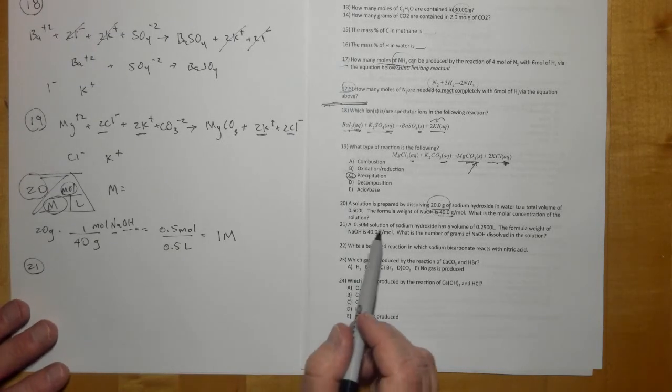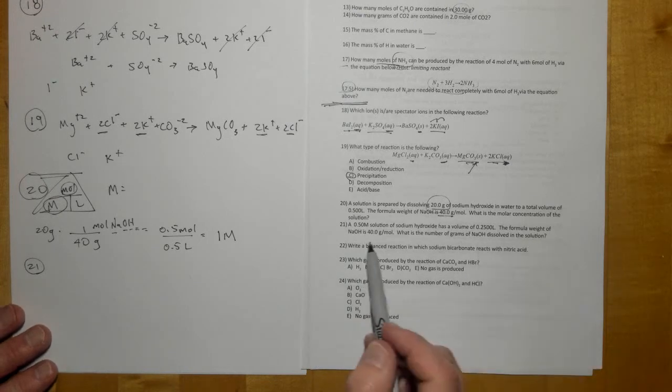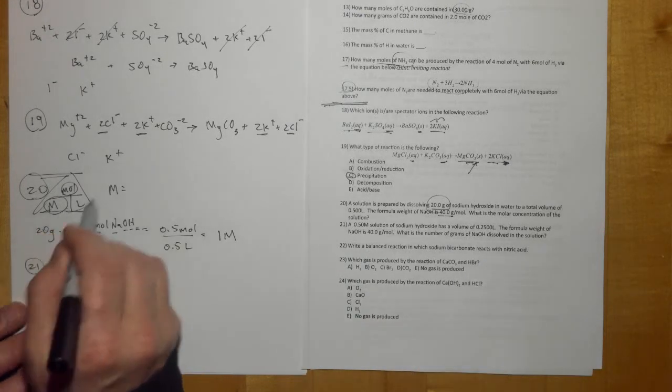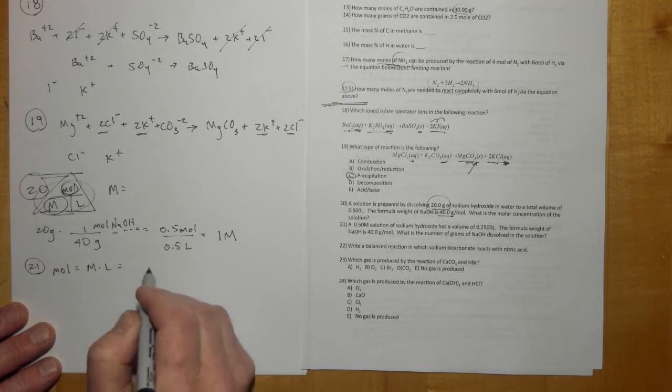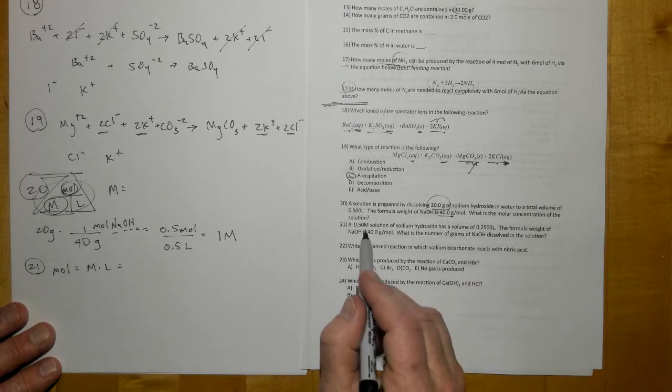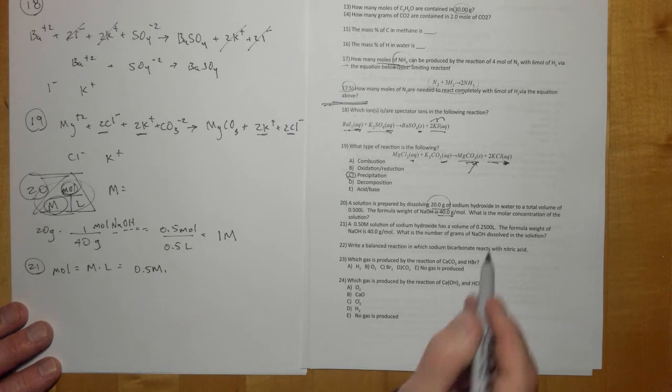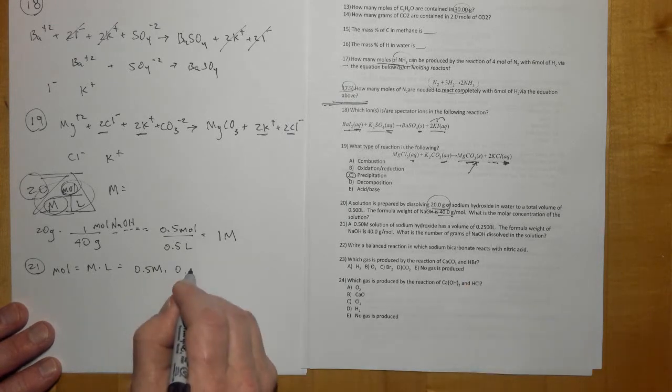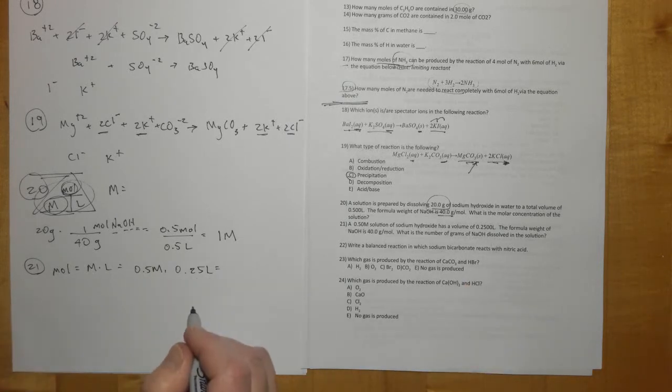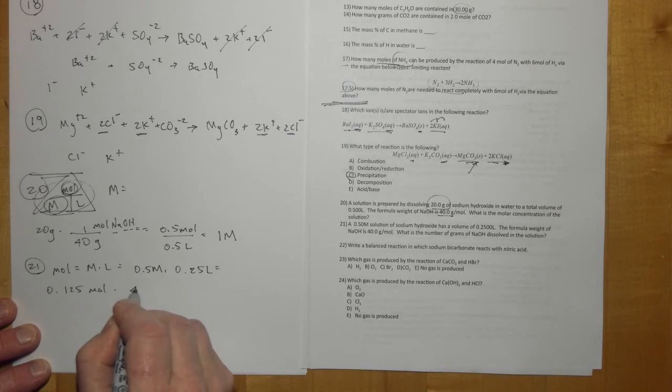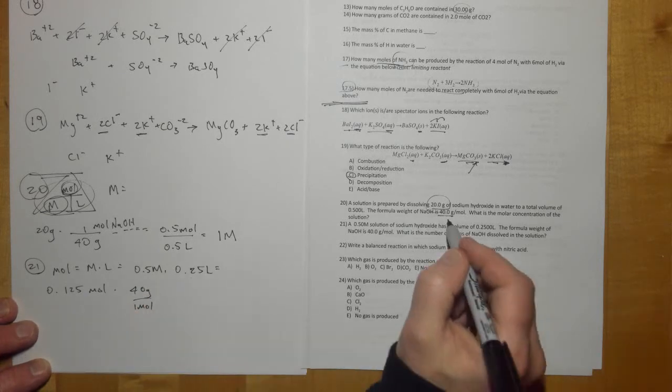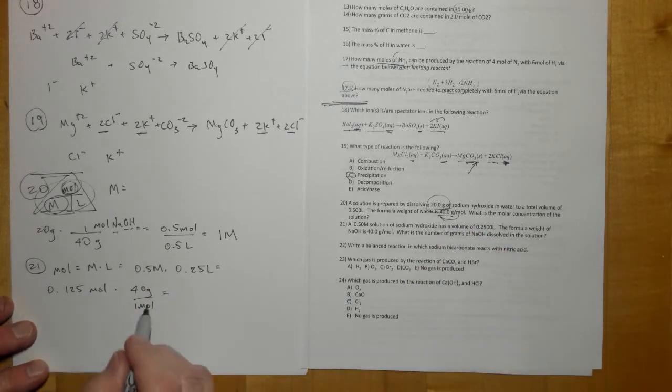21: 0.5 molar solution has a volume of 0.25 L. What is the number of grams? Now we're using the molarity triangle to find moles. Moles are equal to molarity times liters. Molarity is 0.5 and our liters are 0.25, so we're going to end up with 0.125 moles. Then multiply that by 40 grams in one mole, which is my molar mass. So we're going from moles to grams and I believe we end up with 5 grams of NaOH.